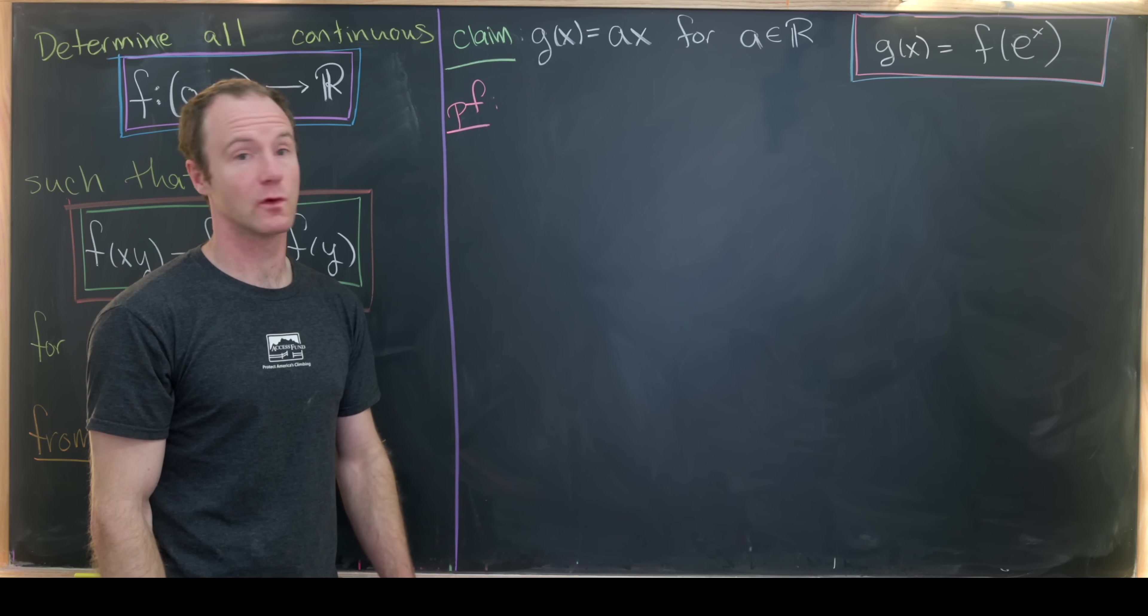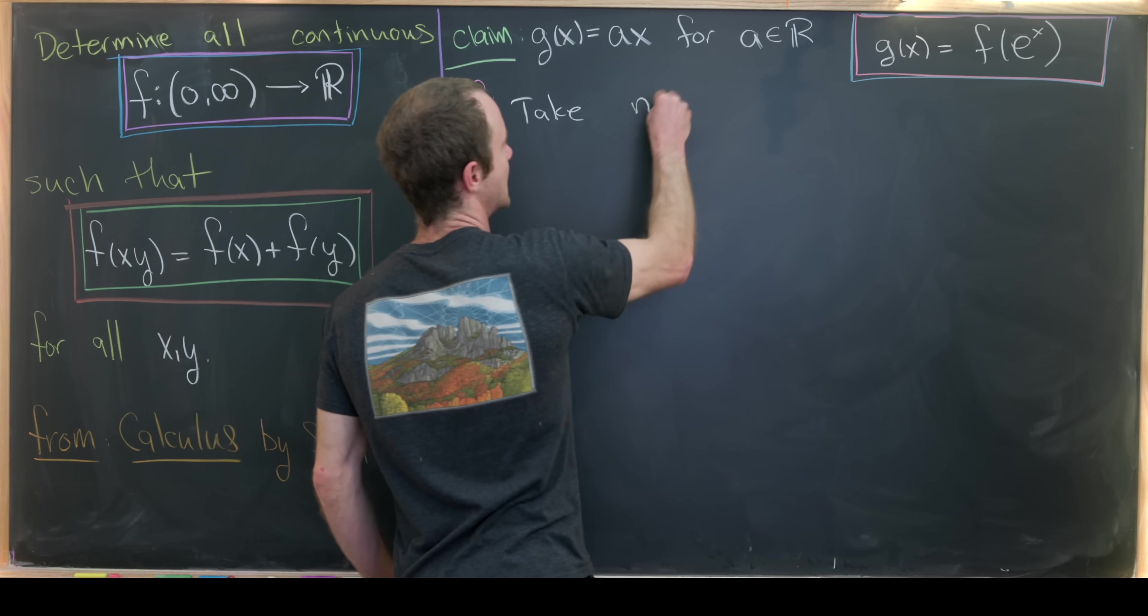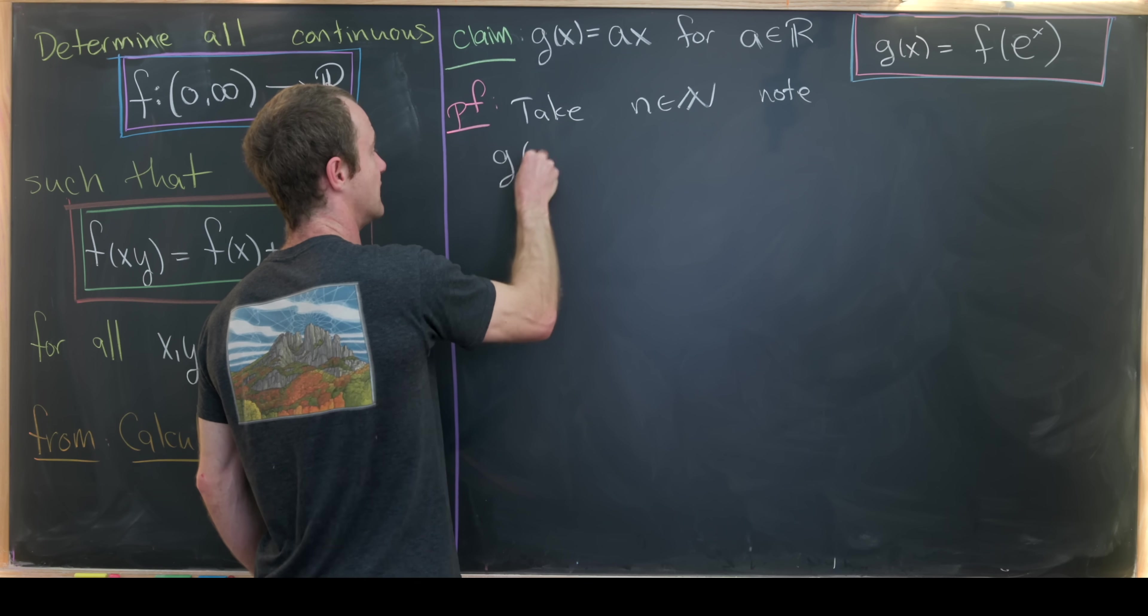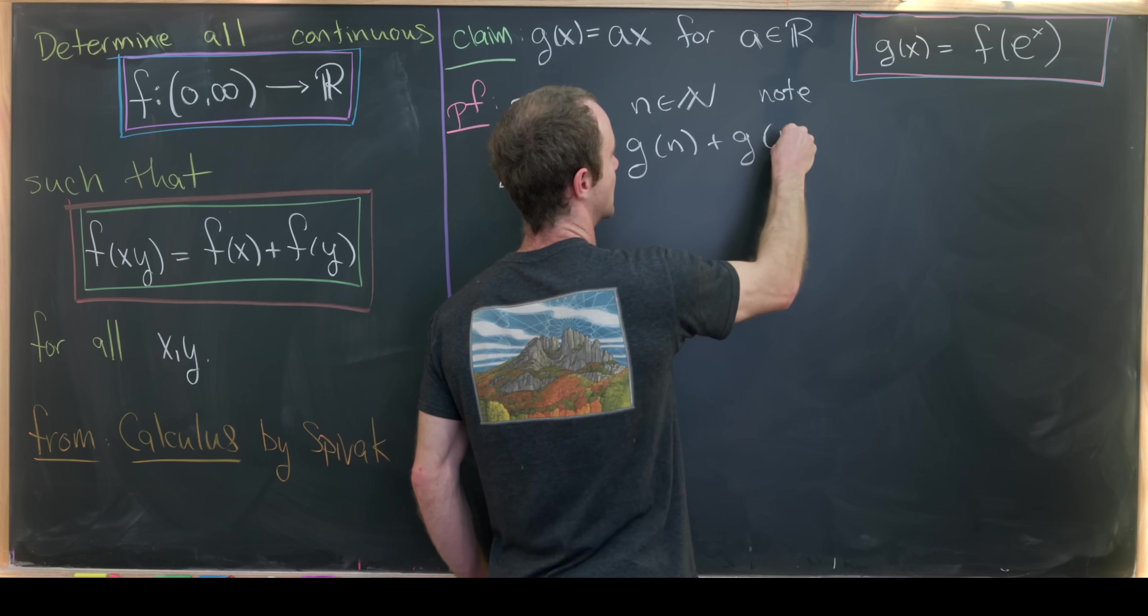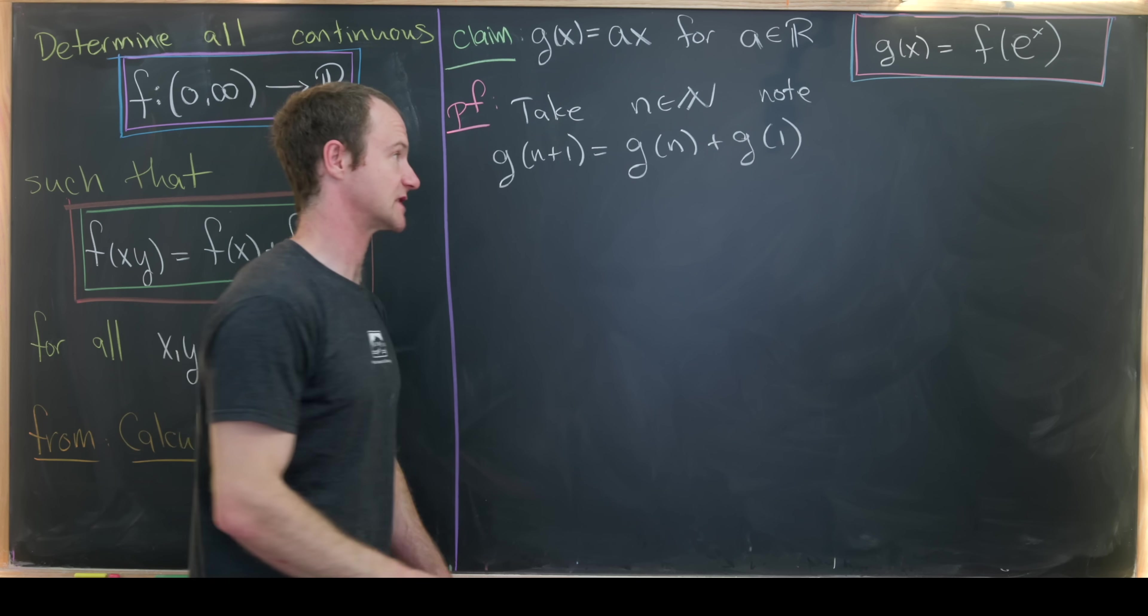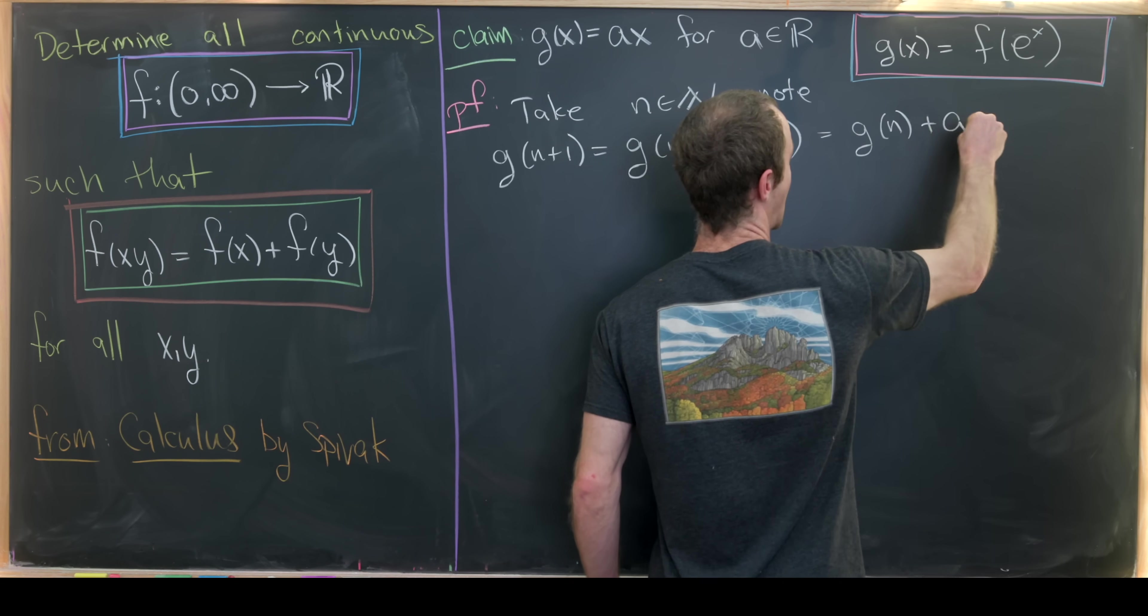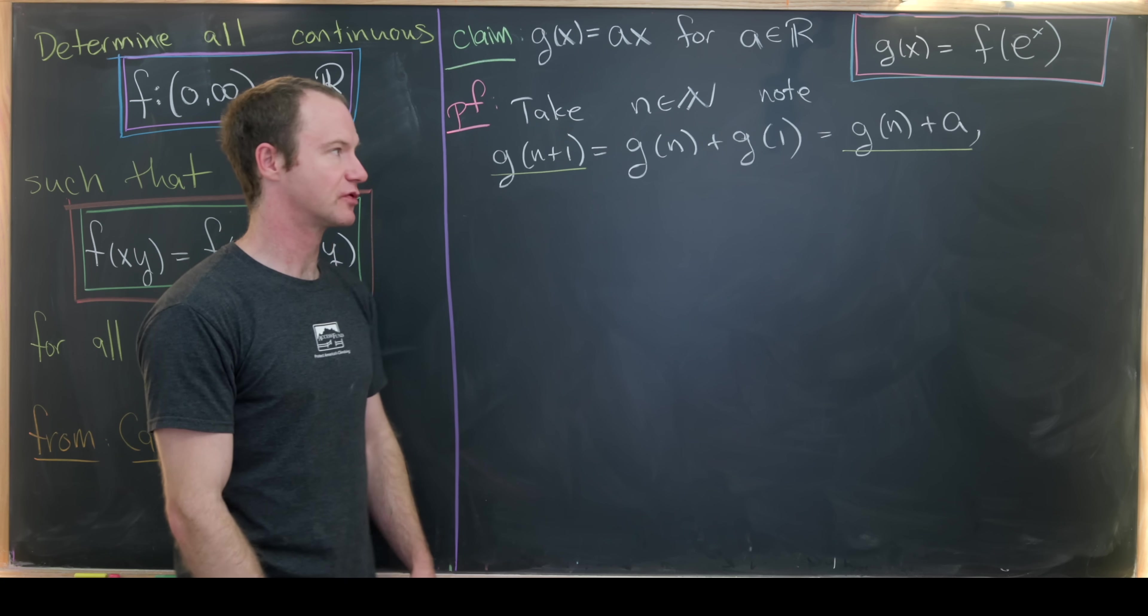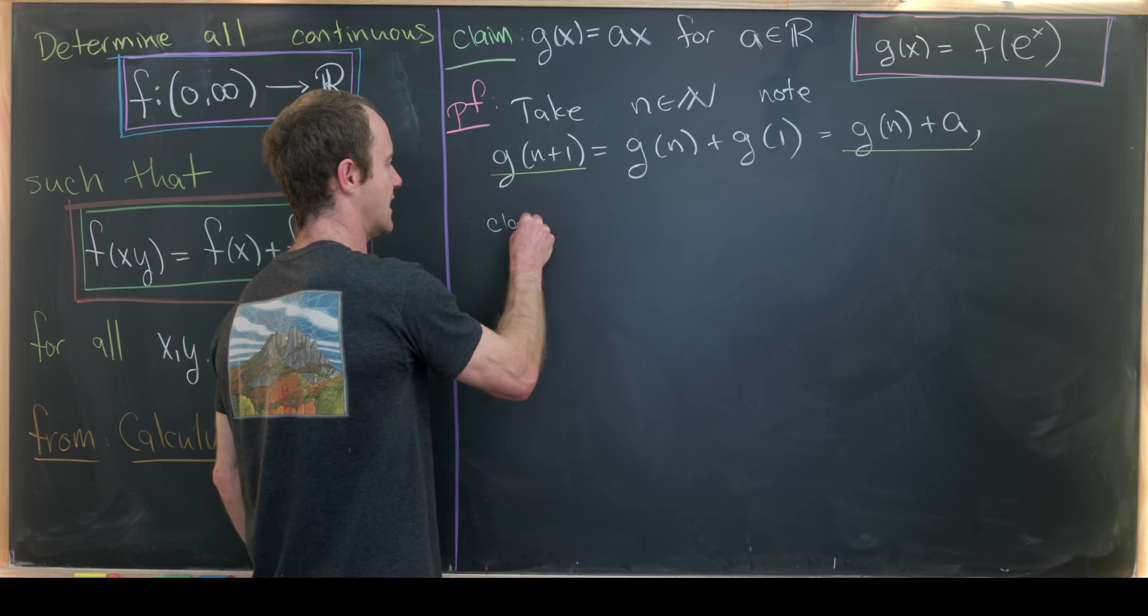We'll start by proving it for natural numbers. Let's take n, which is a natural number, and then note that g(n+1) is equal to g(n) plus g(1). That's just by our rule that we can separate this addition out as follows. But now let's write this as g(n) plus a. So in other words, we're setting a equal to g(1). And then we can take this equation and prove by induction that g(n) is equal to a times n.